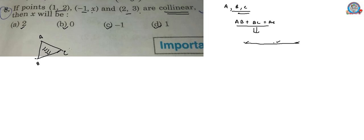If three points are given in coordinate geometry, then the area of triangle is half times x1 times (y2 minus y3) plus x2 (y3 minus y1) plus x3 (y1 minus y2). We can assign (1,2) as (x1,y1), (-1,x) as (x2,y2) and (2,3) as (x3,y3).